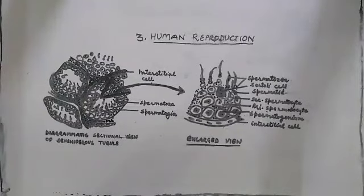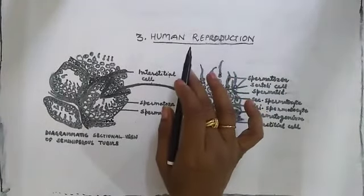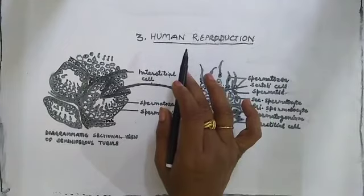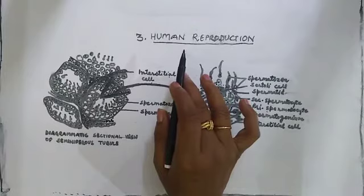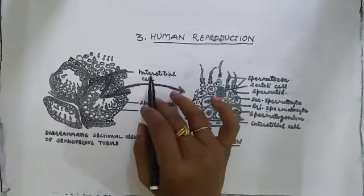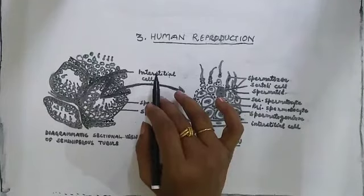Hello class 12 students, welcome to Madhu ma'am's class. In this chapter on human reproduction, earlier you have studied about the male reproductive system. The most important male reproductive organ is the testis, which has about 250 compartments known as testicular lobules, as studied in the earlier lecture.